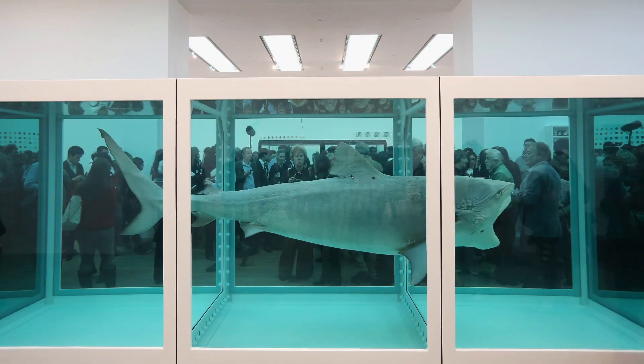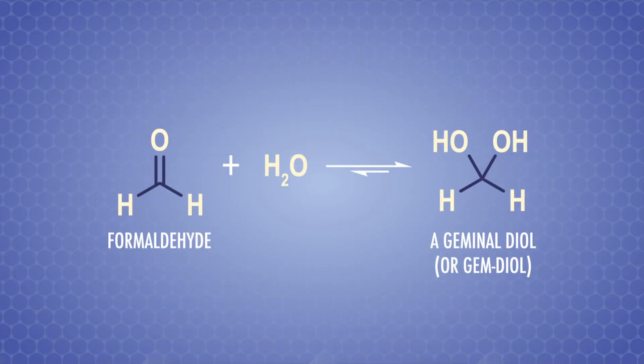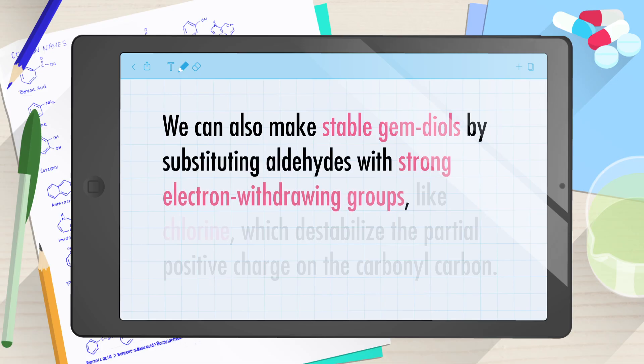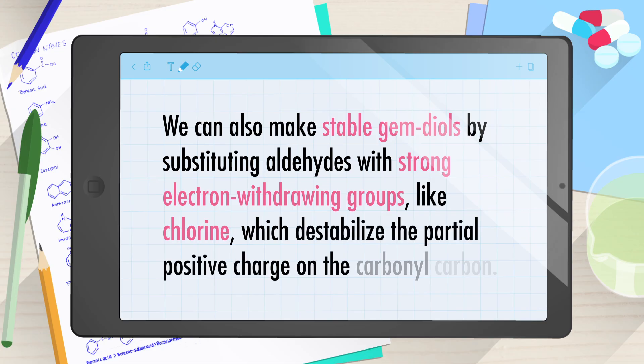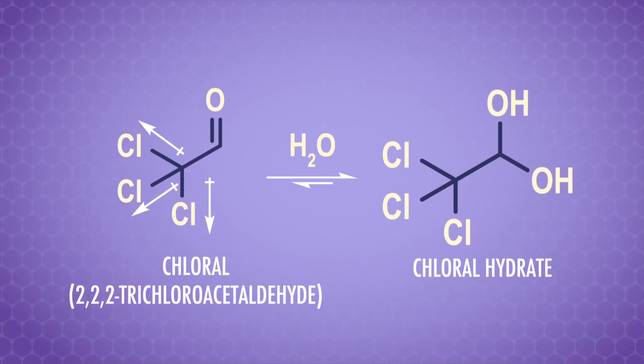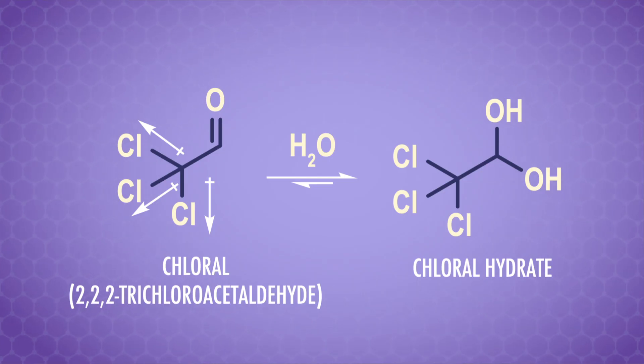And not just scientists, artists, too. Damien Hirst exhibited a whole preserved tiger shark. Thinking about inductive effects, the hydrogen atoms on formaldehyde don't do much to stabilize the partial positive charge on the carbon. So the equilibrium in a formalin solution very much favors the gem-diol, not the aldehyde. We can also make stable gem-diols by substituting aldehydes with strong electron-withdrawing groups like chlorine, which destabilize the partial positive charge on the carbonyl carbon. For example, if we mix 2,2,2-trichloroacetaldehyde with water, it forms chloral hydrate, which was given as a sedative in asylums and much abused in the late 19th century. Chloral hydrate in ethanol is colloquially known as knockout drops, or a Mickey Finn, which is probably named after a Chicago bartender who gained infamy after using this mixture to incapacitate and steal from some of his customers. Big yikes.